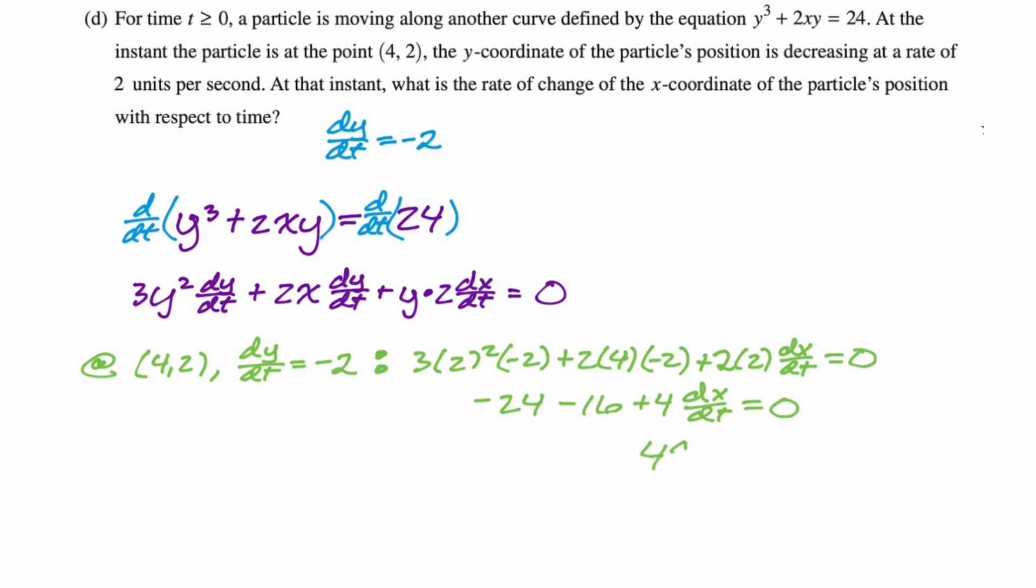So that's 4 dx/dt is 40, and therefore, dx/dt is going to be 10. And then, I think we should say units per second. It doesn't ask for units, though, so you don't need to put them. But there you go. That's the entire question. I hope this was helpful, and good luck.